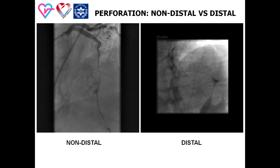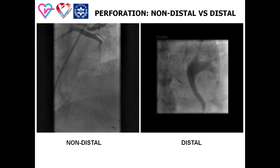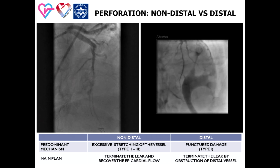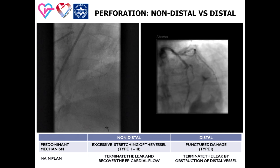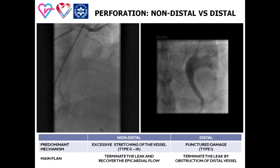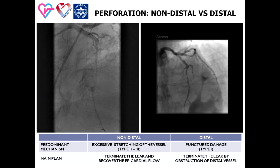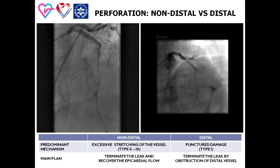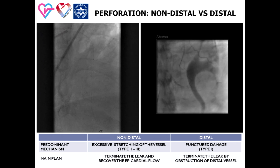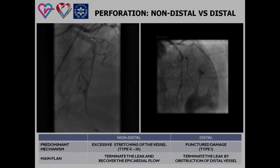These angiograms demonstrate two types of coronary perforations: non-distal versus distal. The main difference is the predominant mechanism — excessive stretching of the vessel for non-distal perforation (scenario two or three) versus puncture damage for distal perforation (scenario one). The main strategic difference is: for non-distal perforation, when prolonged balloon inflation is not sealing the perforation, the goal is to terminate the leak and recover epicardial flow; whereas for distal perforation, the goal is to terminate the leak by obstruction of the distal vessel.